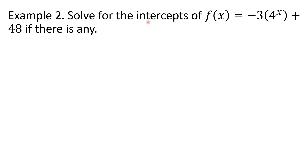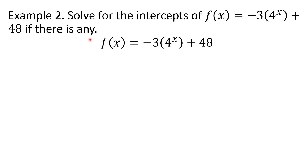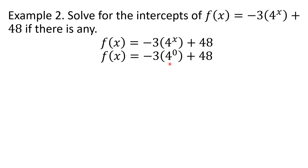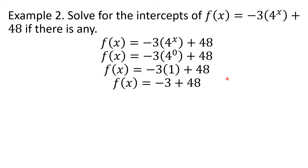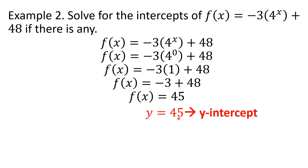Now we solve for the y-intercept. The y-intercept comes from the intersection of the graph and the y-axis, so its coordinates are (0, y). We substitute 0 for x: f(x) = −3 · 4⁰ + 48. Any number raised to 0 equals 1, so f(x) = −3 · 1 + 48 = −3 + 48 = 45. Therefore, the y-intercept is y = 45.